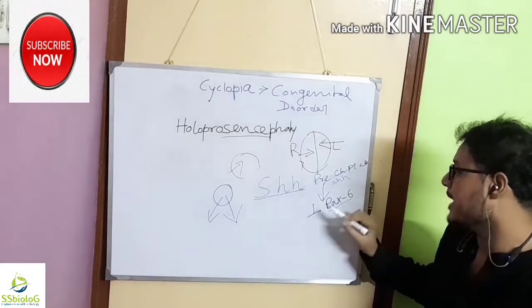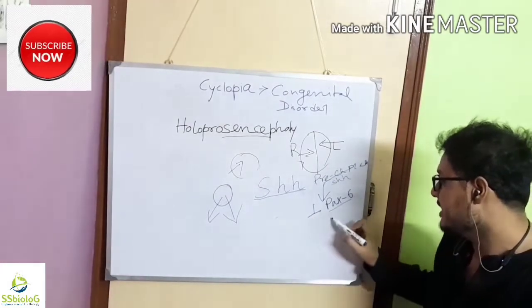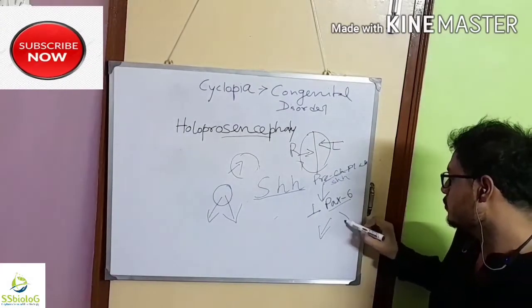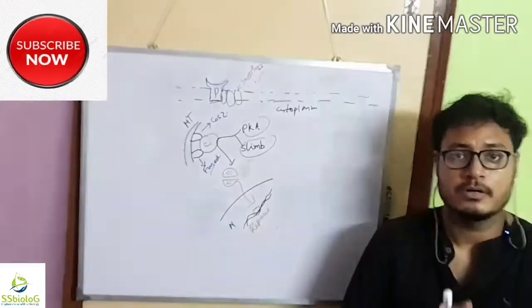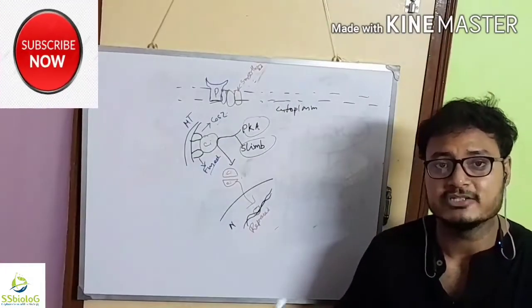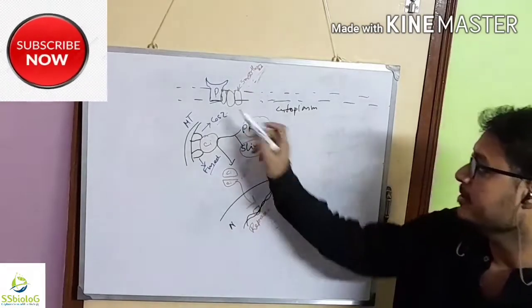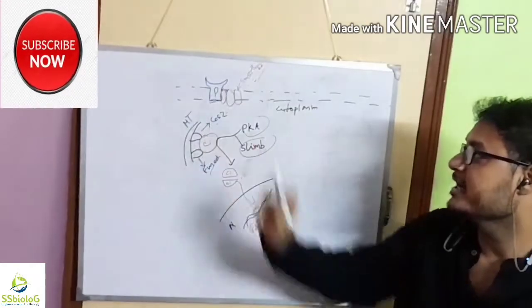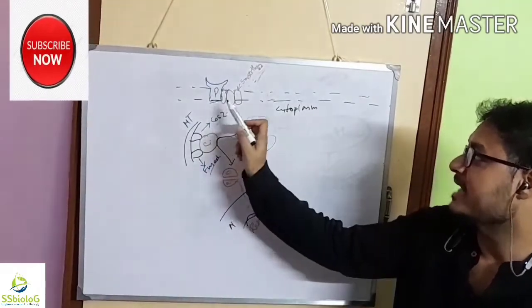By suppressing the Pax6, one eye field is developed into two bilateral eye fields. Now let's talk about how sonic hedgehog works. Sonic hedgehog has a receptor called Patched receptor, which is located in the membrane and is associated with smoothened protein.